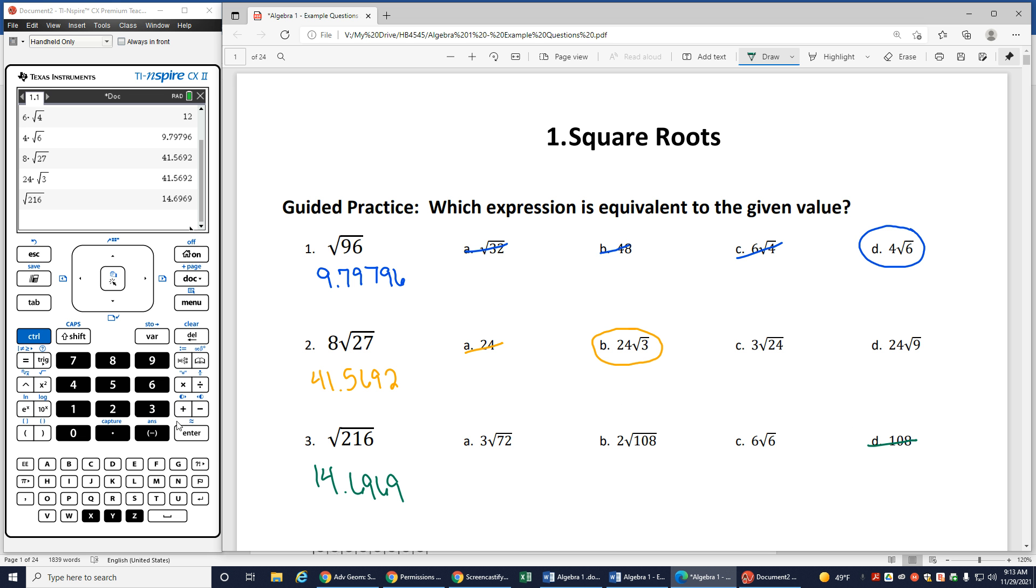I know it's not going to be my 108. 3 square root of 72 is not 14, 2 square root of 108 is not 14, 6 square root of 6, oops, need to hit my 6 first, hold on, 6 square root of 6 gives me, there's my 14.6969, c is my correct answer.